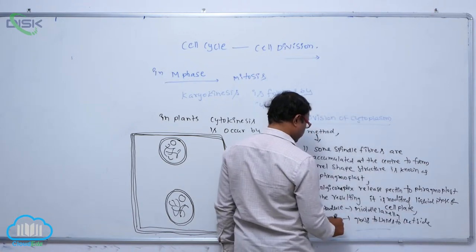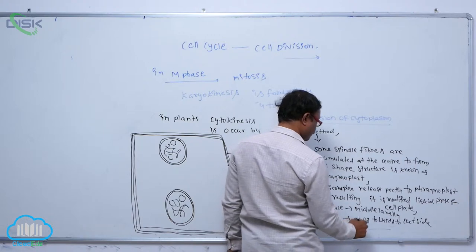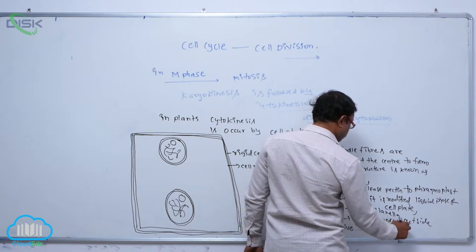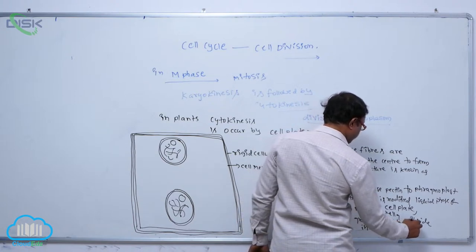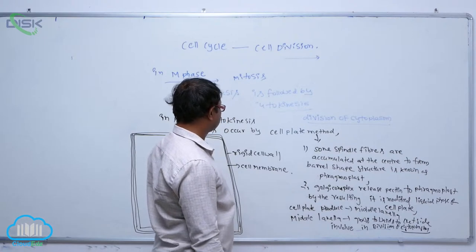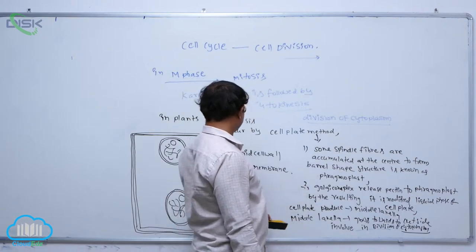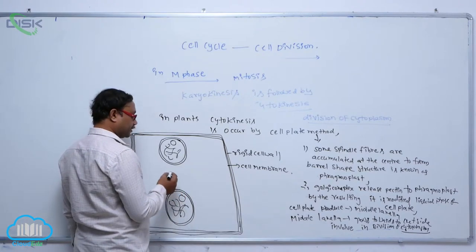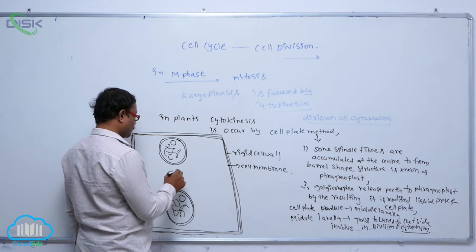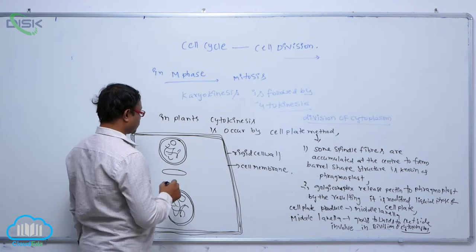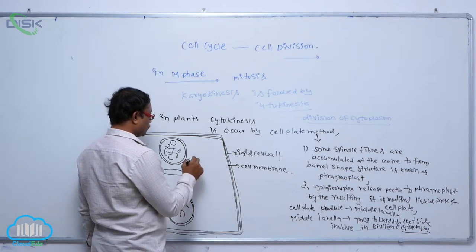This process is involved in the division of cytoplasm. For example, in a two-nucleate cell, spindle fibers are formed at the center to form that barrel-shaped structure. This barrel-shaped structure is known as the phragmoplast.